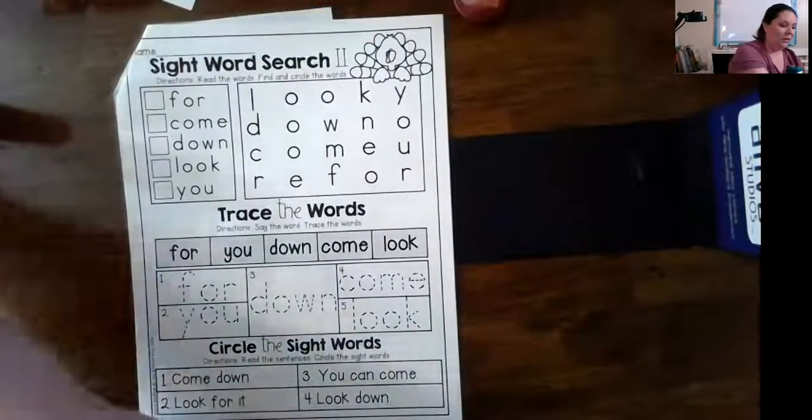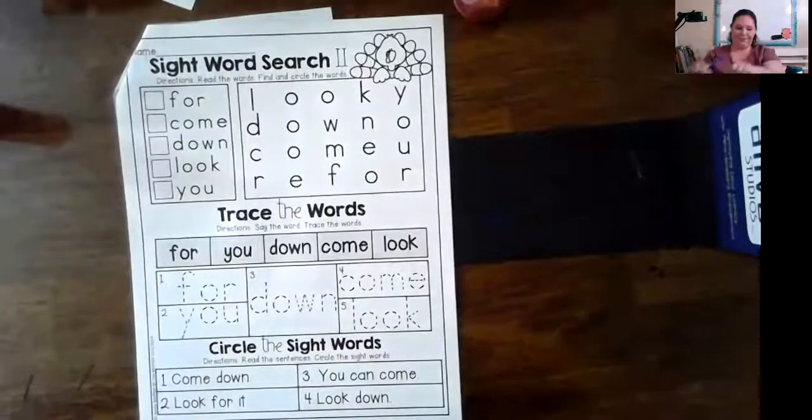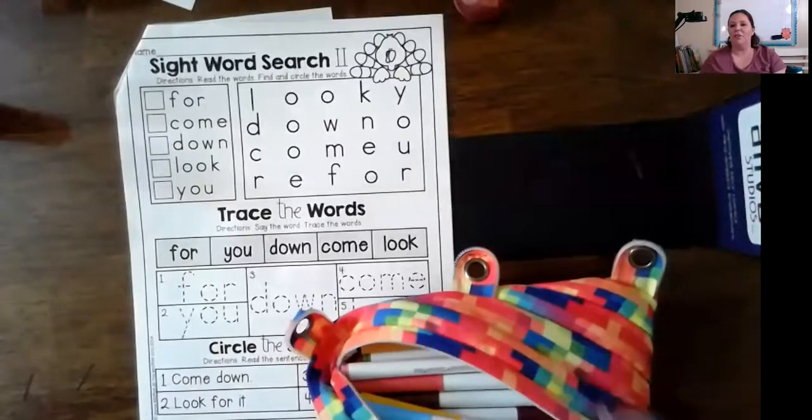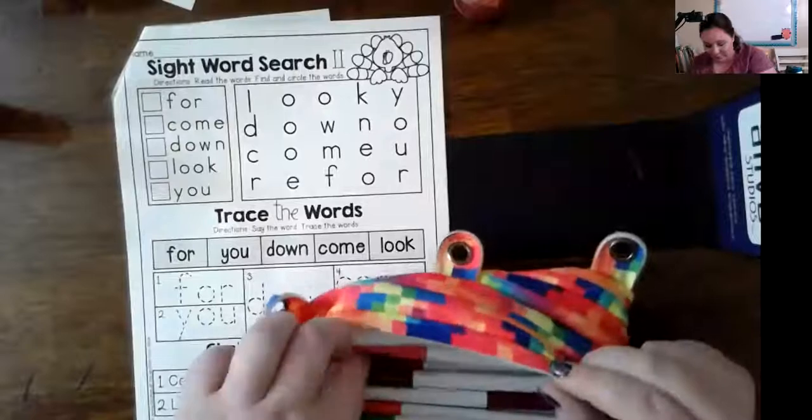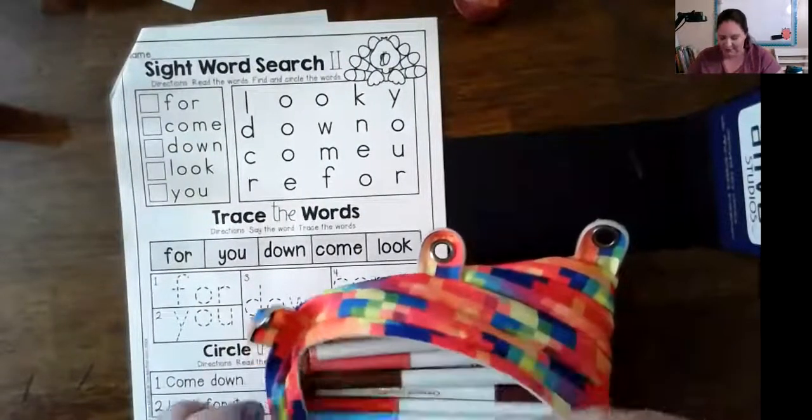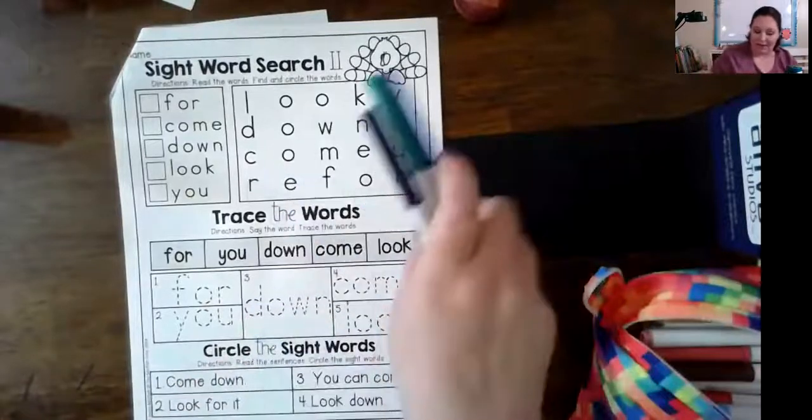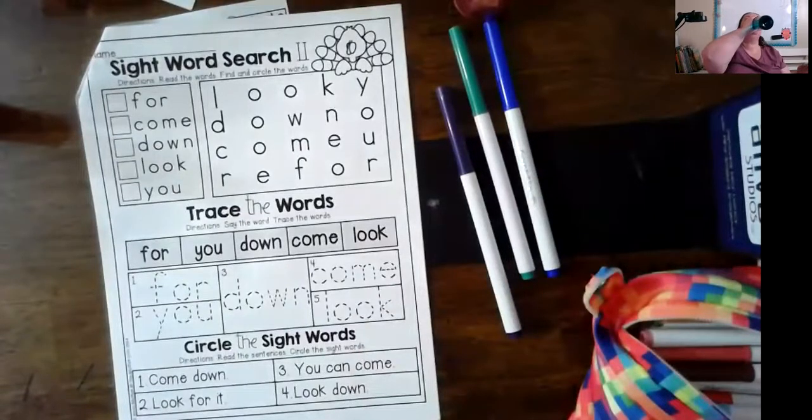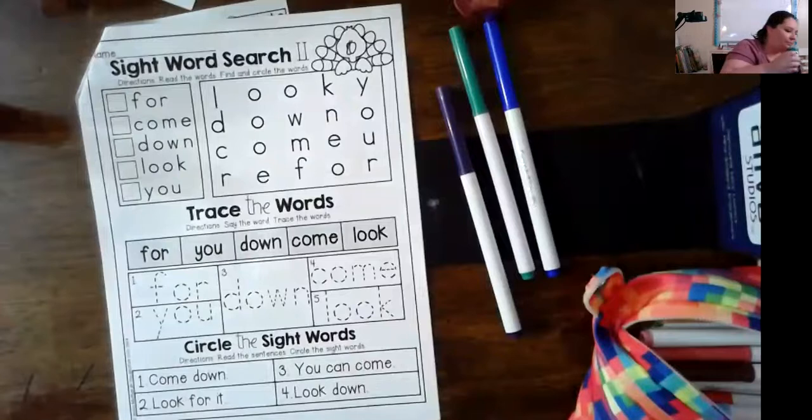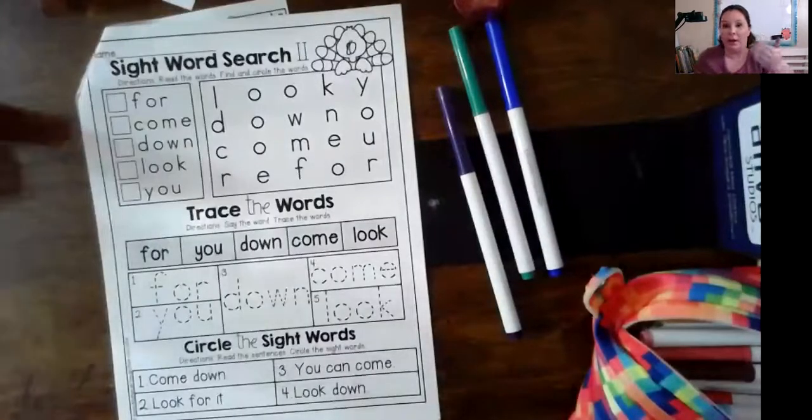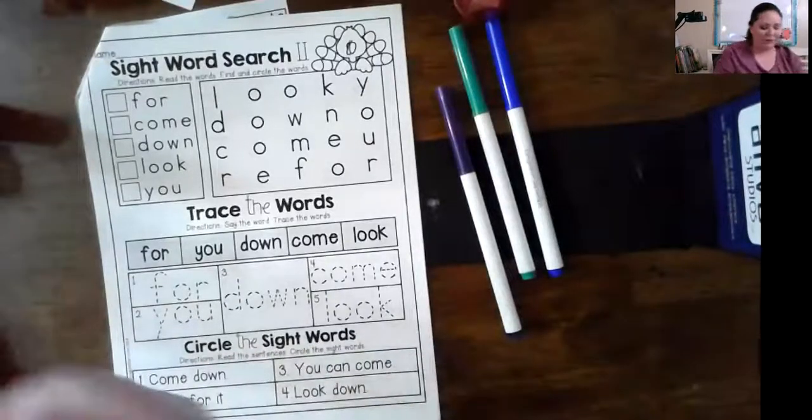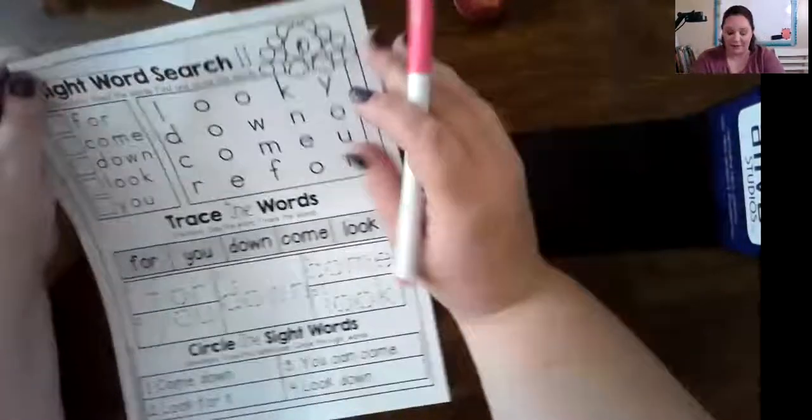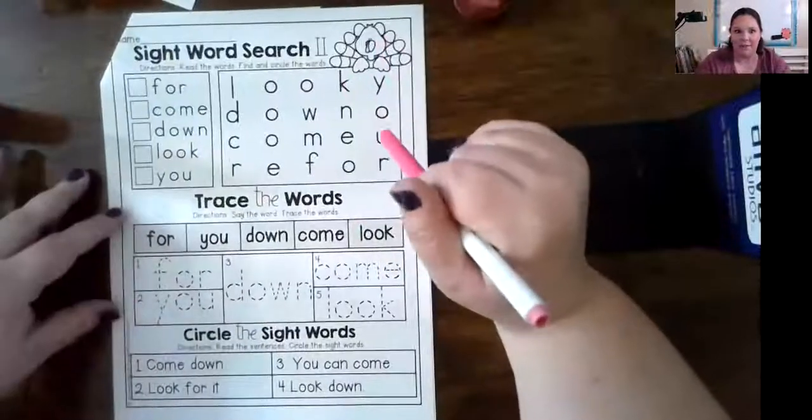I moved the bag of markers and she scurried across, what a little stinker. I've got some markers here, water break. Now she's on the floor like you cannot cross this line. She's so funny. I need a bright, bright color. Let's see if this works.